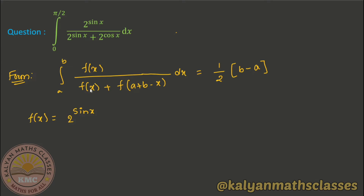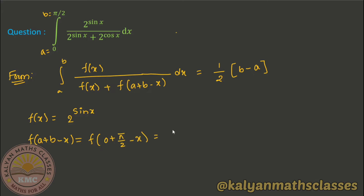Next, I substitute into the formula. The value f(x) = 2^sinx, and I write it in the form of f(a+b-x). Here a = 0 (lower limit) and b = π/2. So a+b-x becomes 0 + π/2 - x. This gives us f(a+b-x).